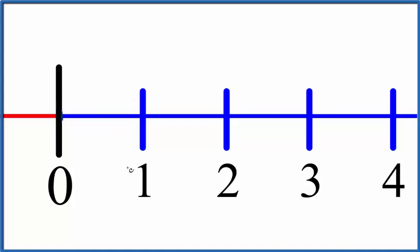One over three. Why don't we divide this into three equal pieces? So now we have one, two, three equal pieces.